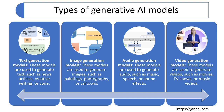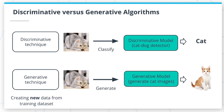Video generation models are used to generate videos such as movies, TV shows, and music videos. If you provide input images or text, based on this training input the model can generate new videos such as movies, TV shows, and music videos.